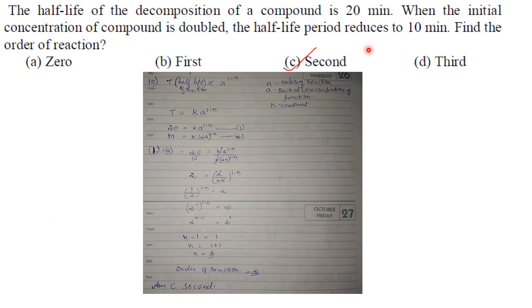The t½ of decomposition of a compound is 20 minutes. When the initial concentration is doubled, the half-life reduces to 10 minutes. Find the order of the reaction. t½ is directly proportional to a^(1-n), where n is order. So 20 = ka^(1-n) and 10 = k(2a)^(1-n). Solving, we get n = 2. Answer is option C, second order.